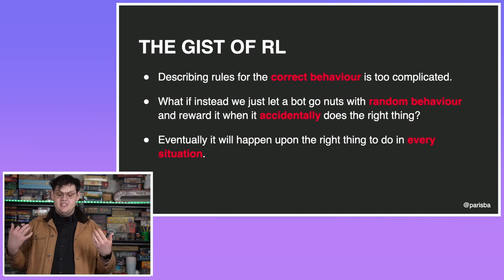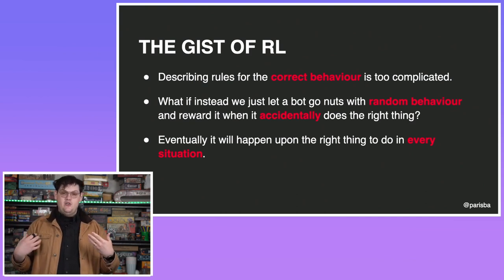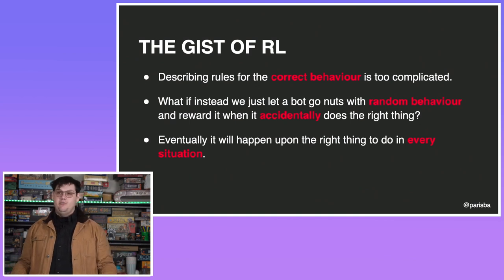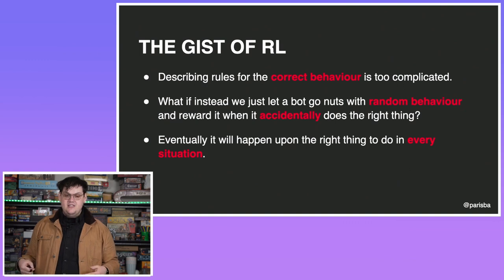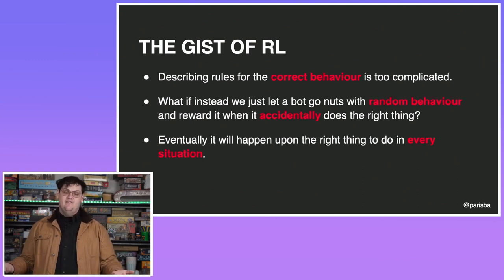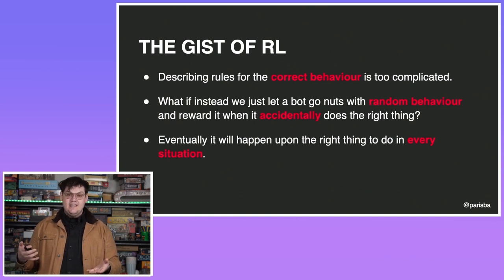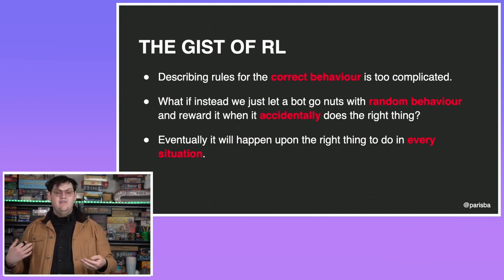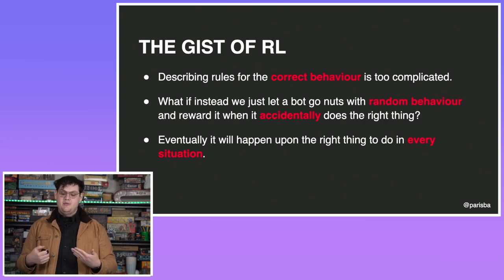The gist of reinforcement learning is that describing the rules for the correct behavior of something you want to see is actually quite complicated and fiddly — it could be thousands of rules, thousands of options, branching, huge and complicated. Way too hard. Instead of describing the rules, we create a bot or an agent — a thing that does our bidding — and tell it to go nuts with random behaviors. When it does something that's kind of what we want, it gets a reward. When it does something we don't want, it gets a penalty, a negative reward. Over time, with a lot of random actions, it eventually converges on the correct behavior — sometimes called a policy. You might be thinking: isn't that just trial and error? And yes, that is correct. It's also kind of how humans learn, which is where some of the neural network terminology you see around machine learning comes in.